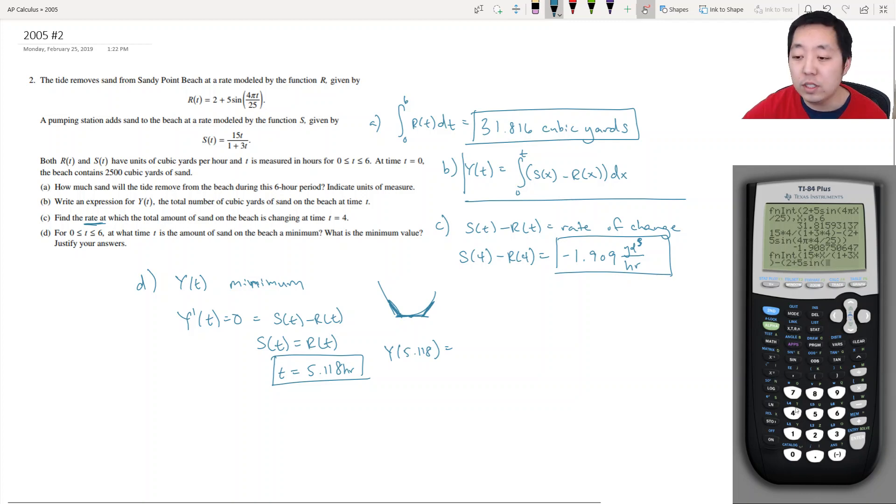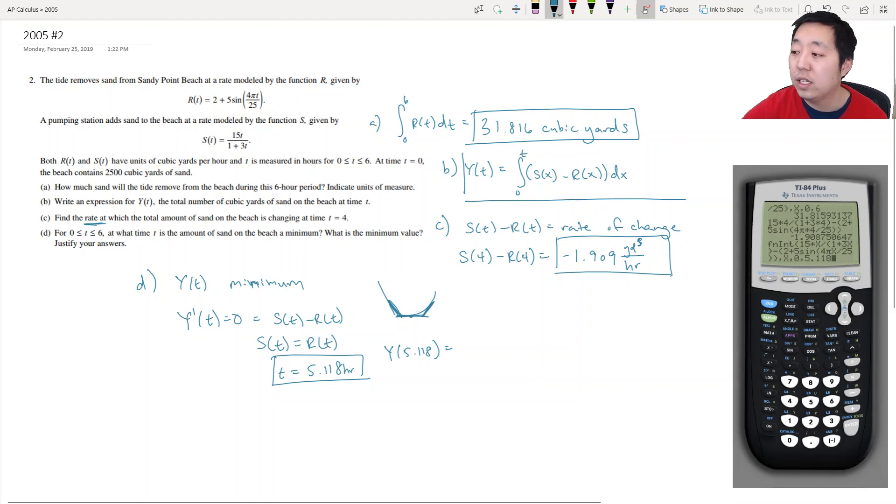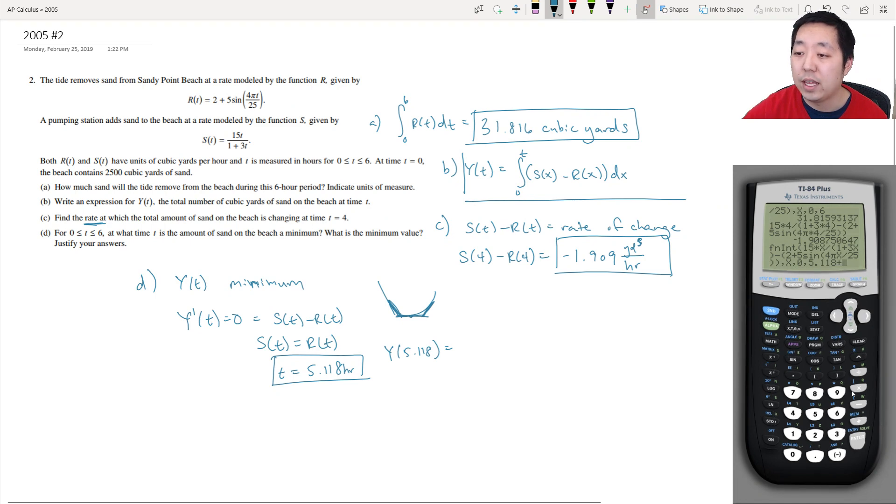Because some of you may not have those really expensive TI calculators. There's one thing, this is only going to give me a relative minimum by the way. If I want the absolute minimum, I actually have to check the end points of my boundary condition. So I'm integrating from X from 0 to 5.118. And technically I need to add the original. Oh, you see I left out when I redrew this, I left out the extra 2500. Because I've got to add 2500.